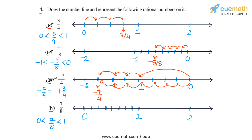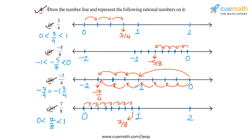Starting from 0, if we make 7 jumps of 1 by 8 to the right, we arrive at this point here, which will be 7 by 8. So this is how you can plot the rational number 7 by 8, and with this we have completed question number 4.